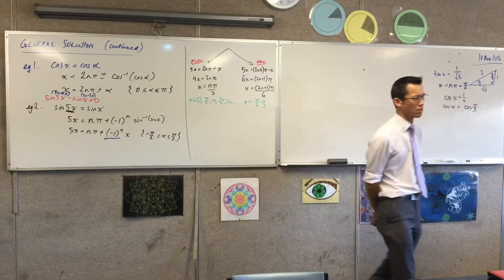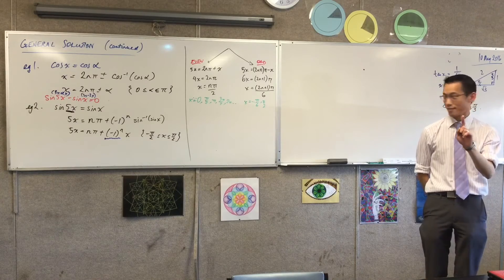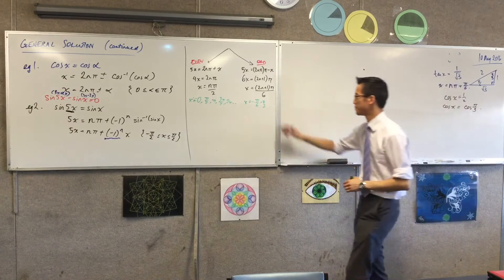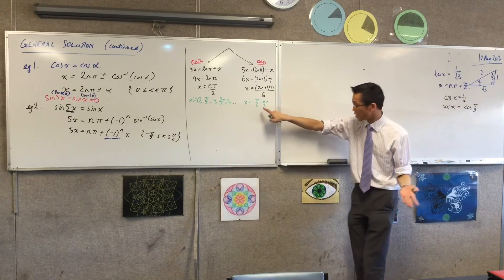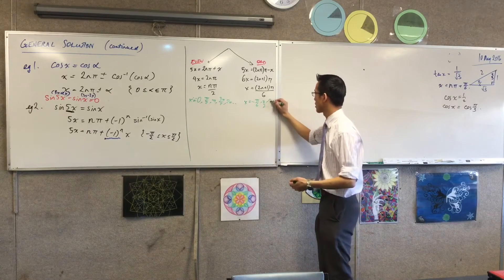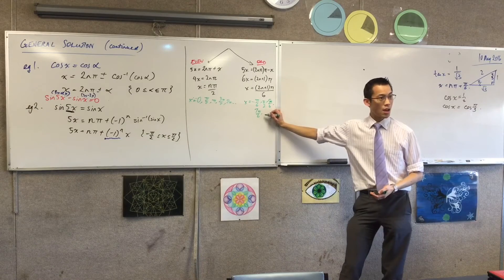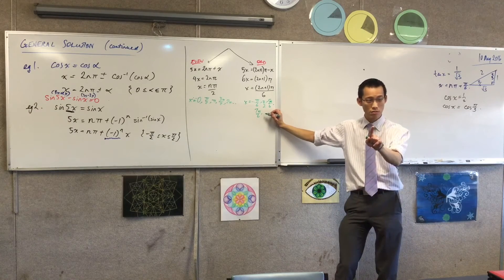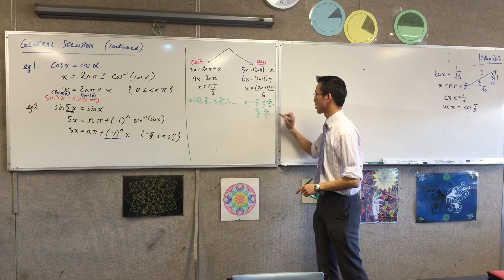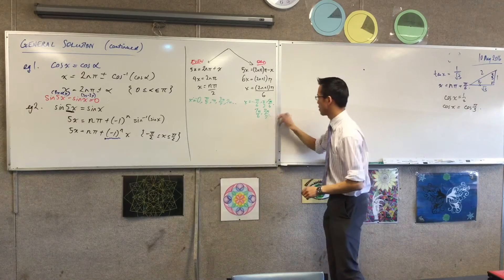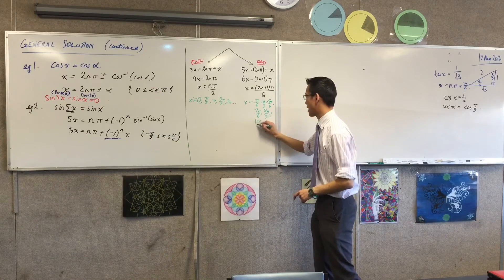What about the solutions from the other case? x is going to be equal to 2n plus 1 on top — that gives me all the odd numbers. When I put n equals 0, the very first solution is pi on 6. The next odd number is 3, so it's 3 pi on 6, which is pi on 2. Now pause for a second — I have a solution that's in this list as well as in this list. Is that a problem? The next one will be 5 pi on 6, then 7 pi on 6, then 9 pi on 6, which is also in my list. Then 11 pi on 6.